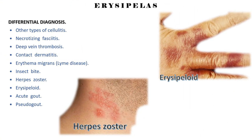Differential diagnosis: other types of cellulitis, necrotizing fasciitis, deep vein thrombosis, contact dermatitis, erythema migrans, Lyme disease, insect bite, herpes zoster, erysipeloid, acute gout, pseudo-gout.